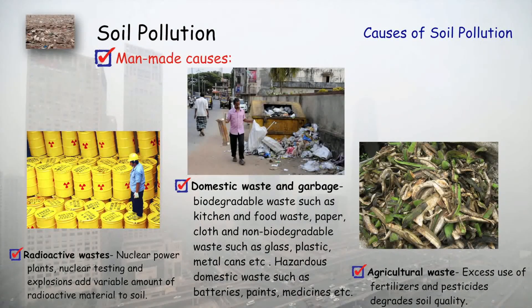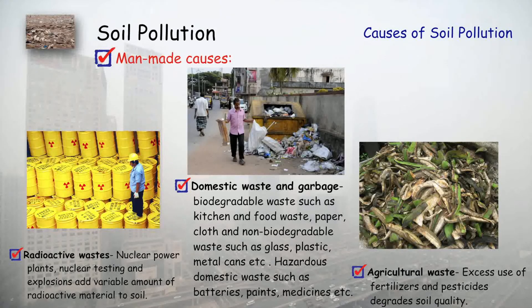There is also radioactive waste which is dumped on the ground, and that is also one of the pollutants for soil pollution. Then there are domestic waste and garbage which we are throwing on a daily basis. And finally, agricultural waste — that will be the waste coming from agriculture products.